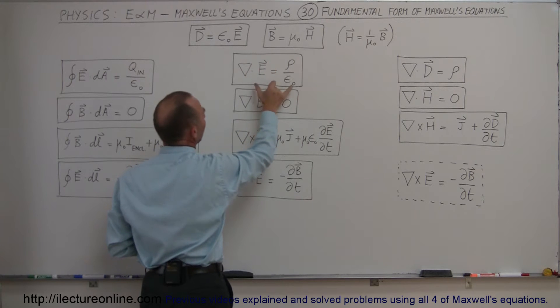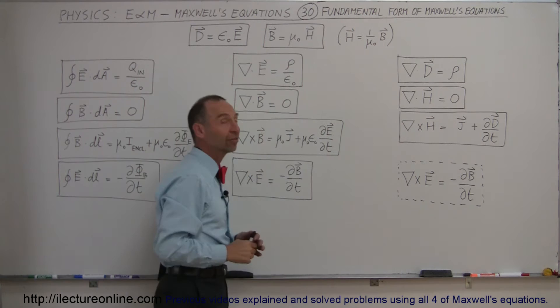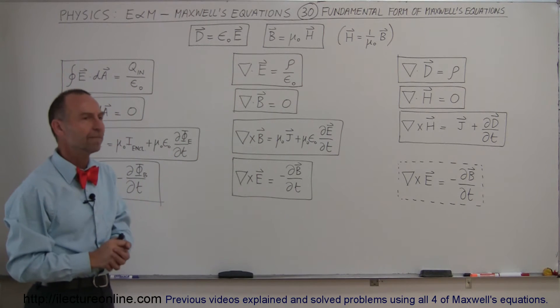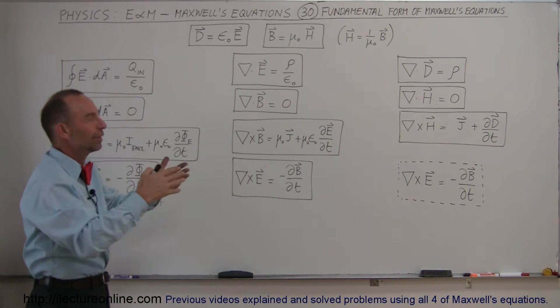So you put D divided by epsilon sub naught, epsilon sub naught cancel out, and you can now write the differential form of Gauss's law simply as the divergence of D is equal to the charge density. It seems so elegant, so easy, so simple.